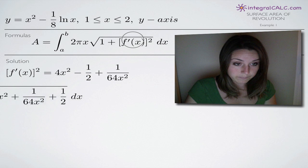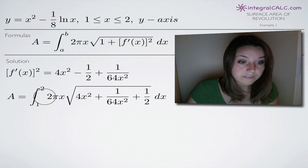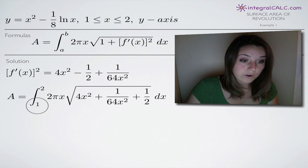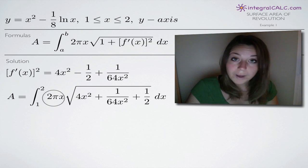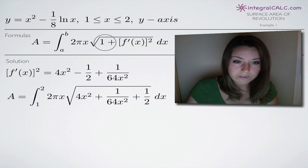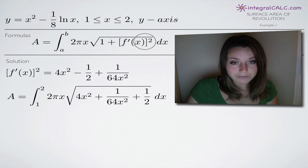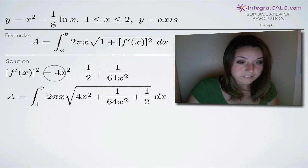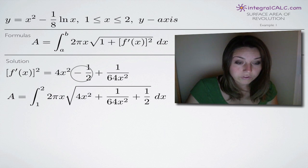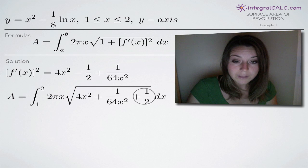When we plug into the area formula, we set the limits to 1 and 2 for a and b. We leave 2 pi x alone as part of the formula, and then under the square root we compute 1 plus f prime of x squared. We have 1 plus negative one-half, which gives us positive one-half, so those two terms combine under the square root sign.